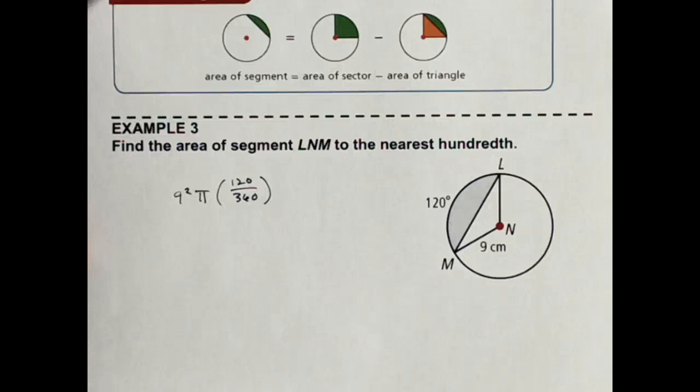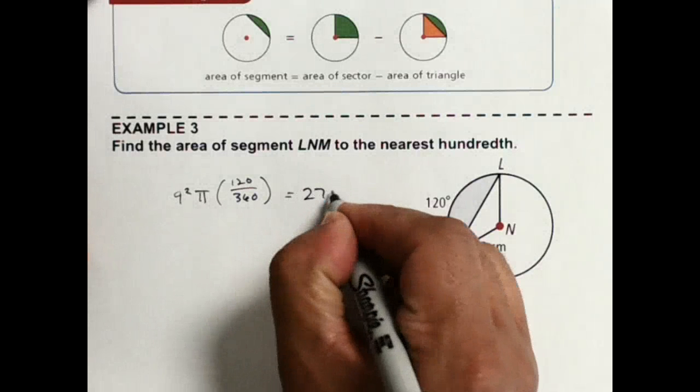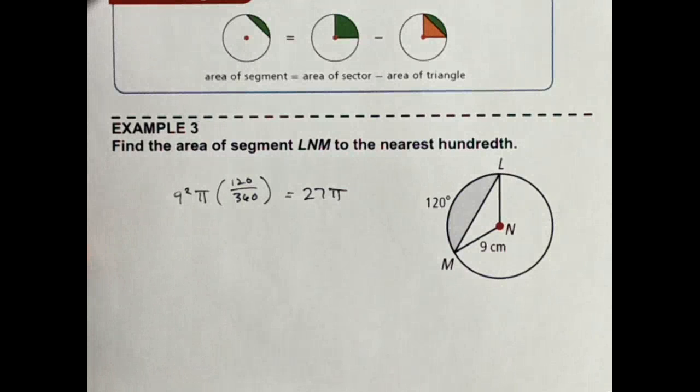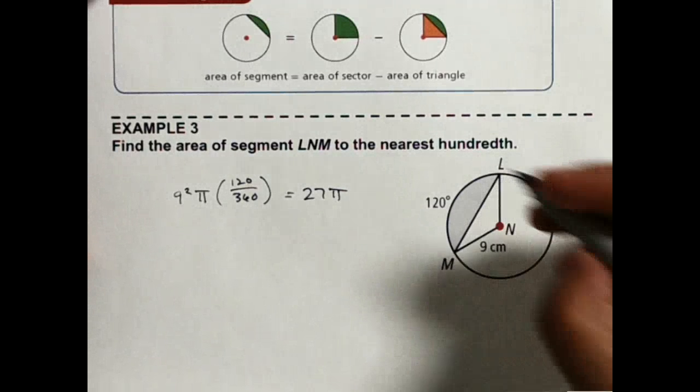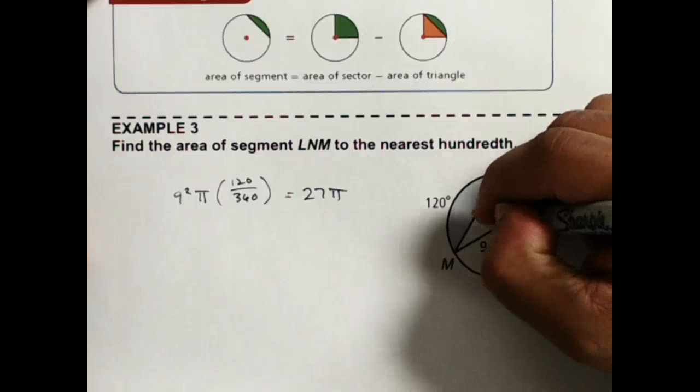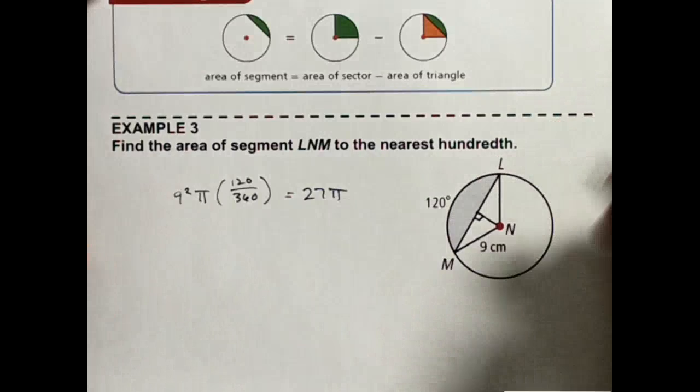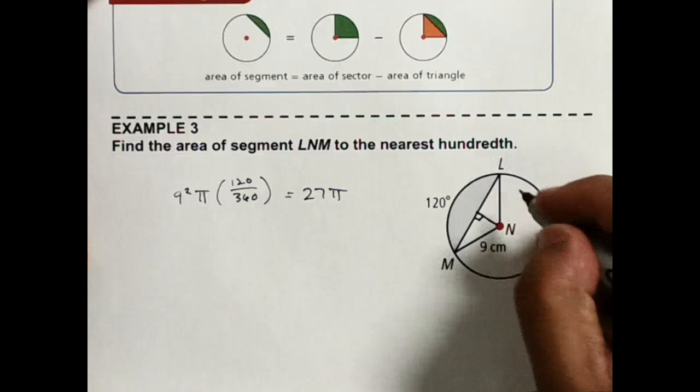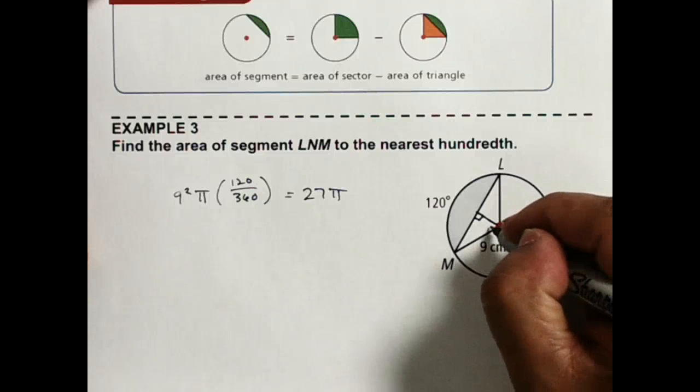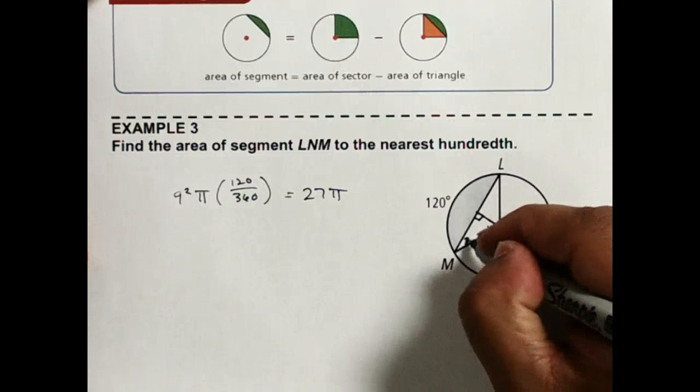Okay, putting that in the calculator. It gives me 27 pi. All right, so now I've got to find the area of the triangle. To do that, I need to draw the height. I'm going to do it this way. Now, because this is 120, this gets split in half, and this becomes 60, so this angle right here is 30.